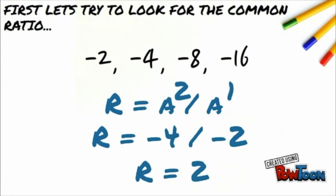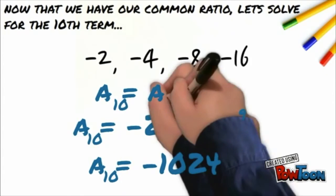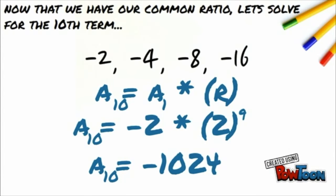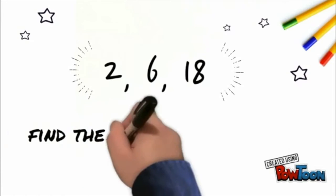To solve for the tenth term, first we have to write the general formula which is a sub n is equal to a sub 1 times r raised to n minus 1. N will be 10 since we are looking for the tenth term, a sub 1 will be negative 2 since it is the first term, and r will be 2. Then plug these values to the formula. Our first step is to simplify 2 raised to 9. 2 raised to 9 is equal to 512 and if this multiplied to negative 2, the product will be negative 1024. So, the final answer will be a sub 10 is equal to negative 1024.